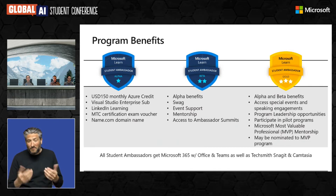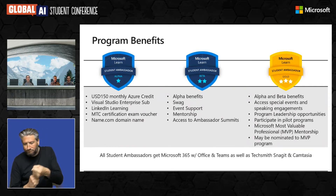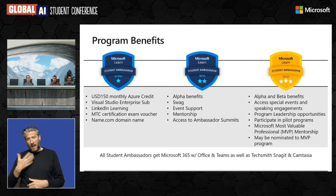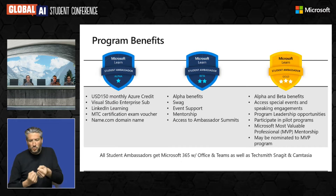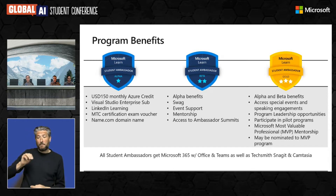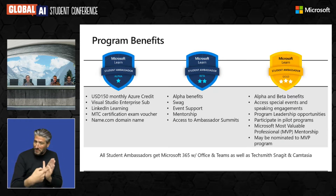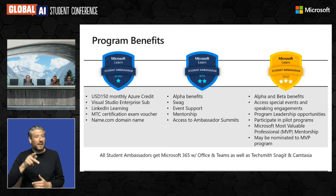We provide event support, mentorship, and access to our summits. For our Gold Ambassadors — some of whom are on this call today — they are selected by the program team and get access to special events and speaking engagements like Build or Ignite. They get to be leaders in the program and in their communities, and they get mentorship from our MVP — Most Valuable Professional — program, as well as the potential of being nominated for an MVP. In fact, Wuda on this call was a Gold Ambassador and is now an MVP — part of his journey as a community leader.